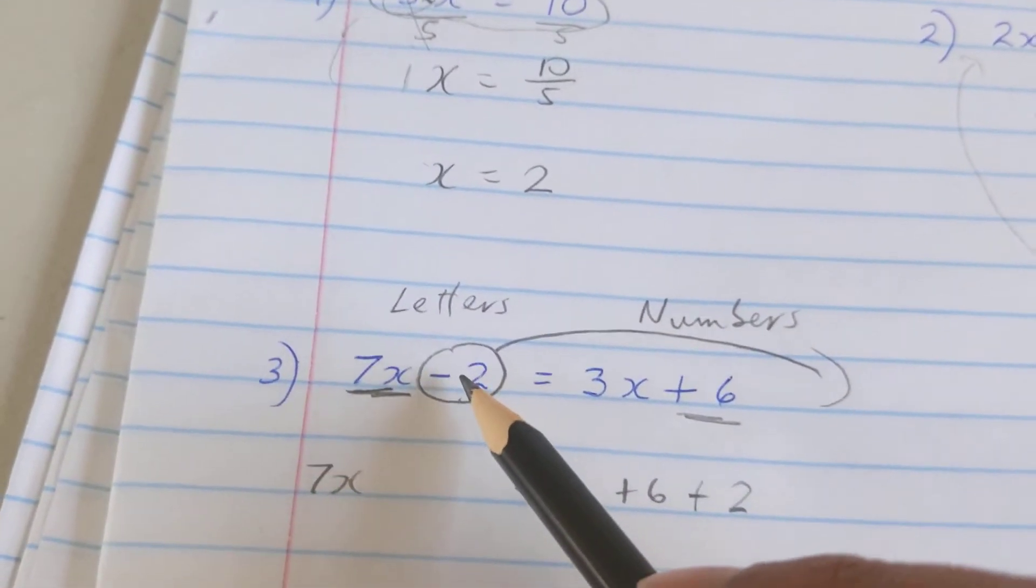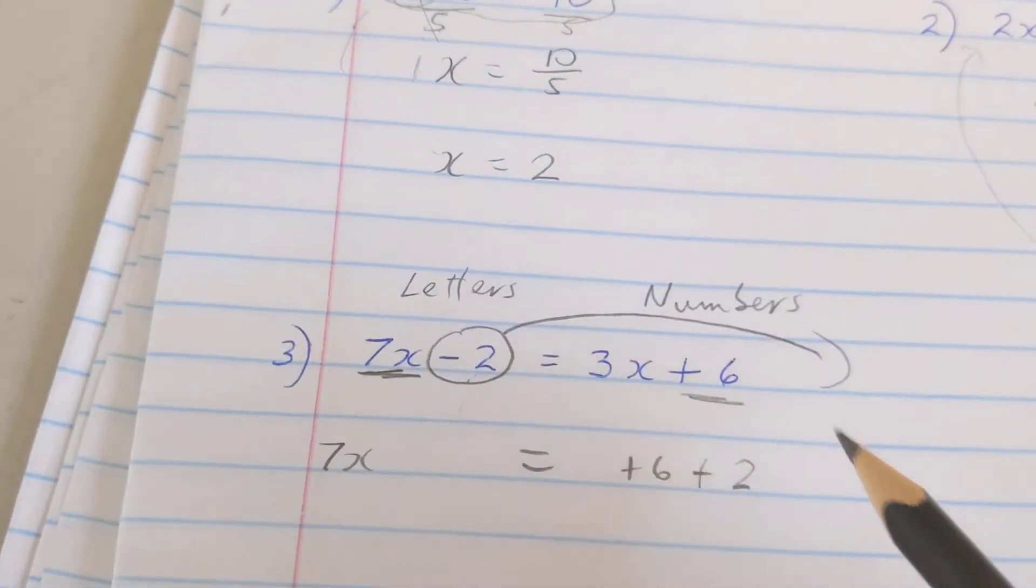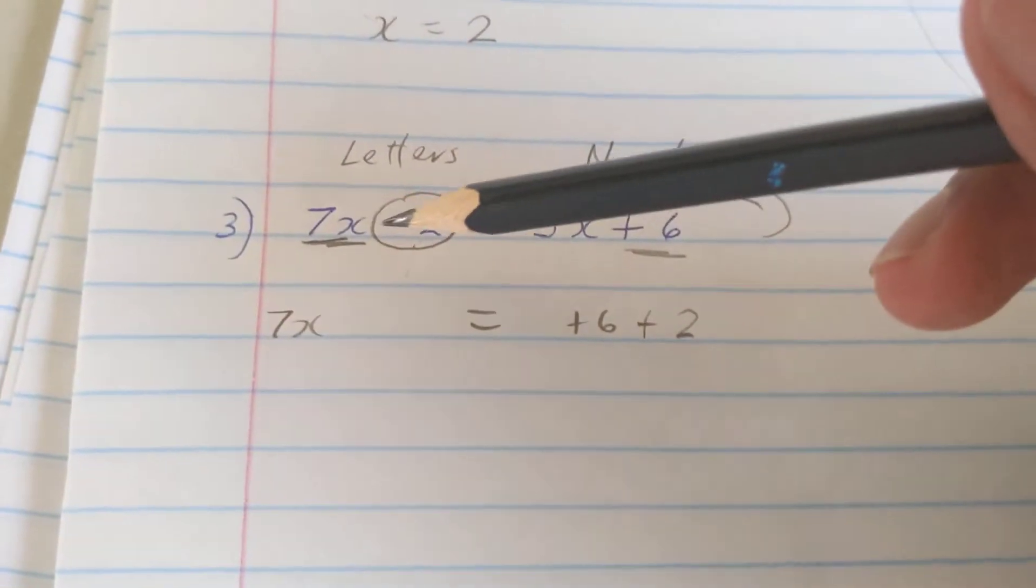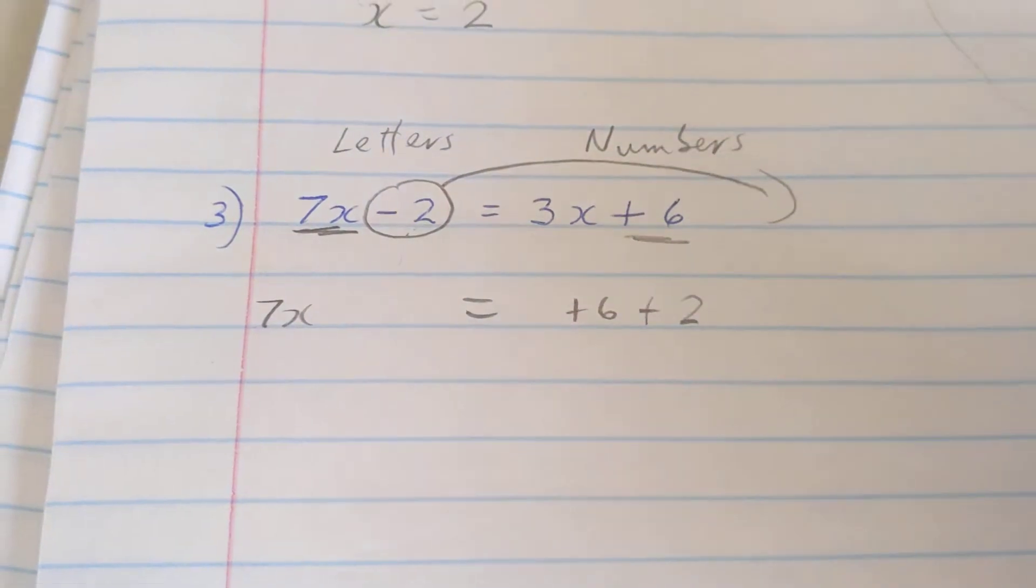Because what we're really doing is, to get rid of minus two, I do the reverse, add two on both sides. But a quick simple way to remember it is it crosses and the sign changes.